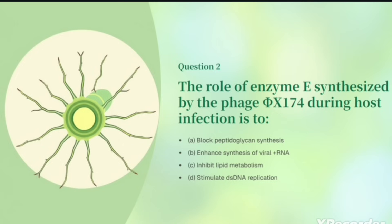The next question: the role of enzyme E synthesized by phage φX174 during host infection. Enzyme E of phage φX174 is a lysis protein. Think of a bacterium as a balloon being filled with phages — enzyme E acts like a needle that makes a hole in the balloon, the balloon bursts, and all the phages come out. The correct answer is: it blocks peptidoglycan synthesis.